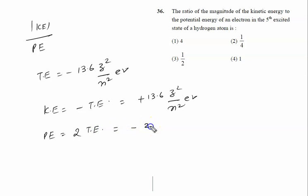Potential energy is always given by two times total energy, so it is given by minus 27.2 z squared upon n squared electron volt.